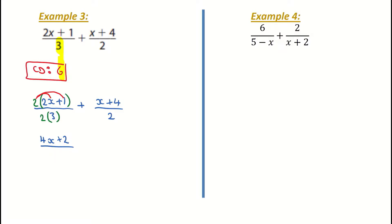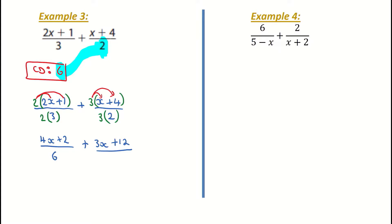Now I come to my second fraction over 2. I figure out how to make this 2 become a 6 — I multiply it by 3. So I put the numerator and denominator into a bracket and multiply both by 3. I put a plus sign between my two fractions. So 3 by x gives me 3x, and 3 by 4 gives me 12 — so 3x plus 12 as my numerator, and 3 by 2 is 6 as my denominator.